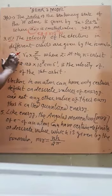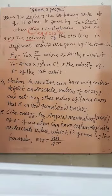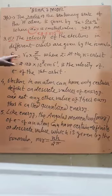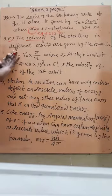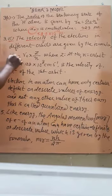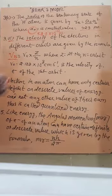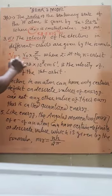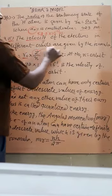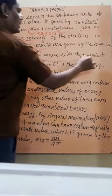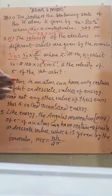Velocity is equal to V0 into z upon n. This is the velocity of nth orbit. V0 is again a constant value. Z is called atomic number, and n is called number of orbit.